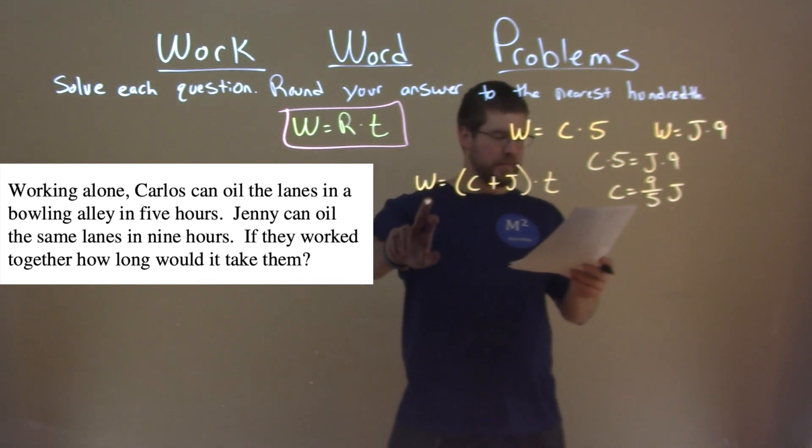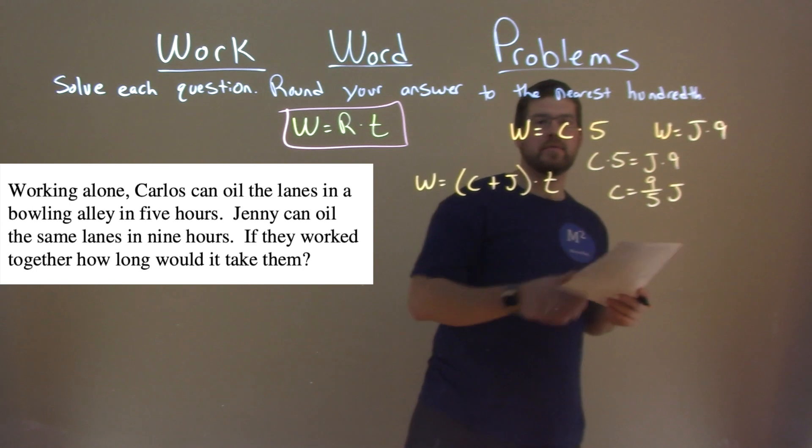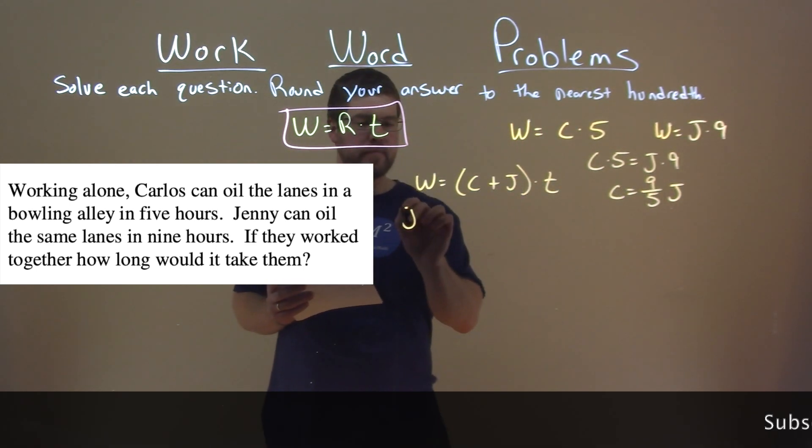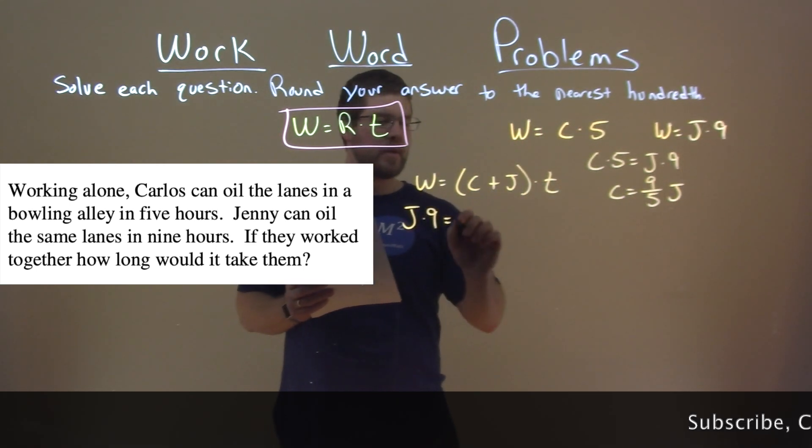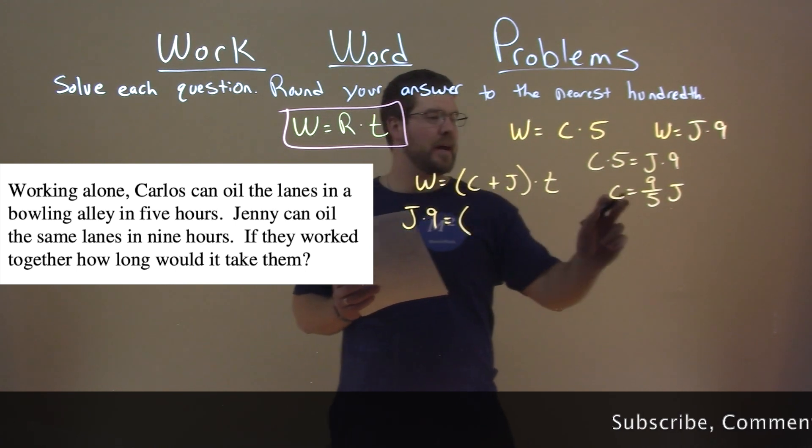Now, we already know that W is equal to J times nine. So we're going to replace that here, J times nine, equal to, and C is nine-fifths J.